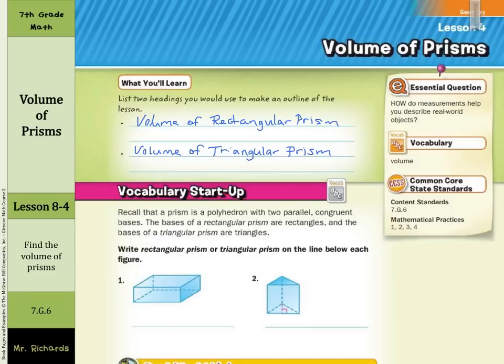So write rectangular prism or triangular prism on the line below each figure. Well, our bases in the first one are rectangles, so this is a rectangular prism. And number two, the bases here are triangles, as you can see, so this would be a triangular prism.